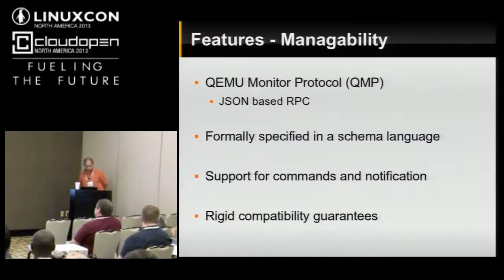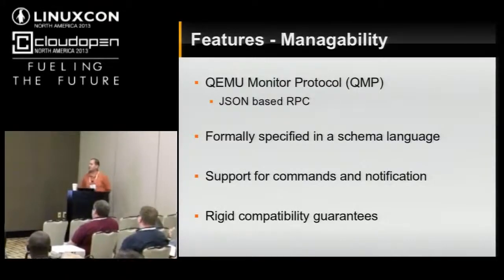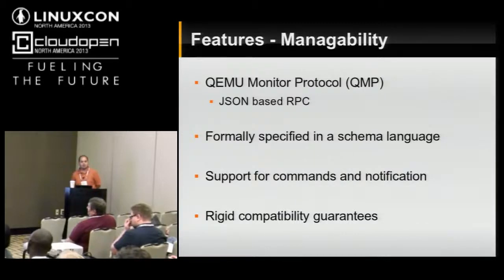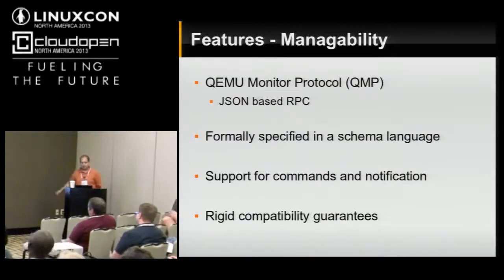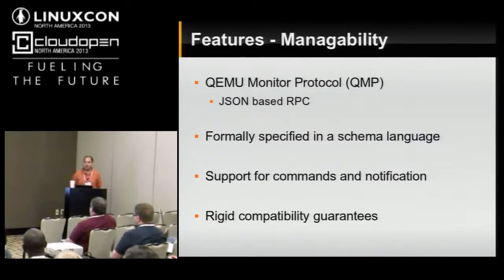Manageability: we have a really tangled history. We started with a text-based protocol, then evolved to a JSON protocol because JSON was cool at the time. The good news is that it's fully specified now. If you're an application developer looking to write against QEMU, it's a very easy thing to do. We have support not just for RPCs but also for notifications so that QEMU can notify when interesting events happen. Most importantly, we have an absolutely rigid compatibility model — we do not knowingly break management interfaces, period. We see this as our most critical responsibility as a project.